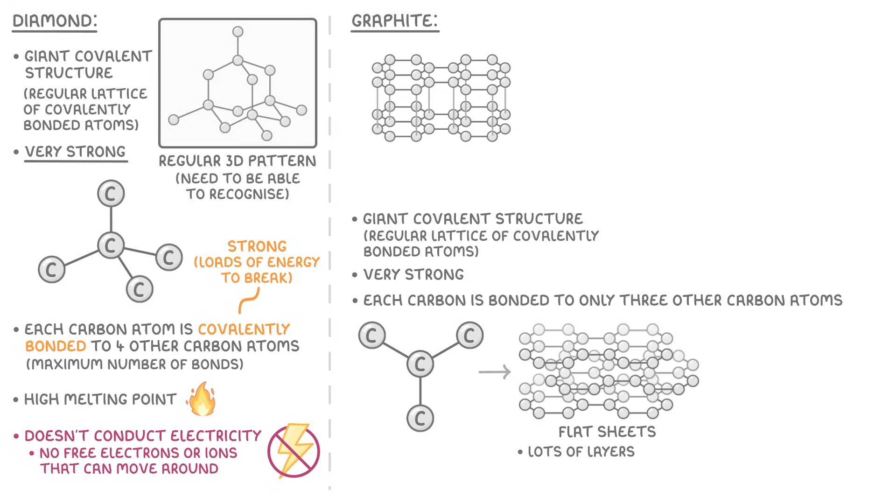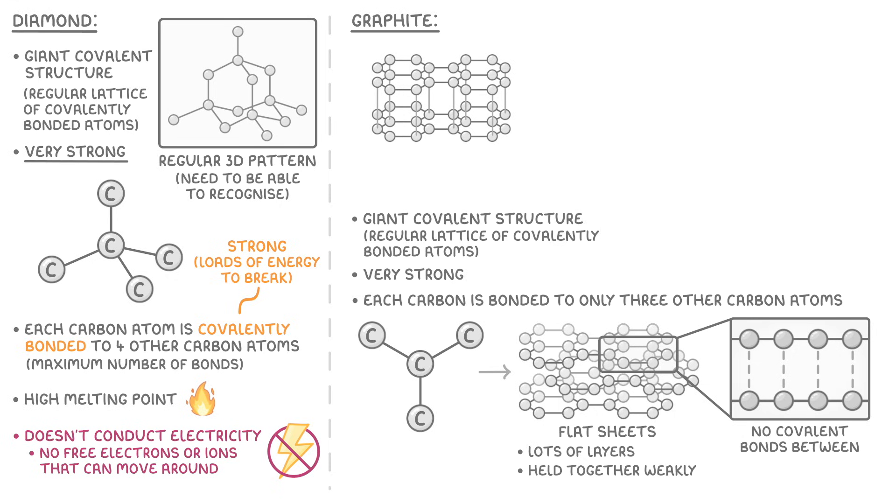However, these individual layers are only held together weakly, as there are no covalent bonds between them. This means that they're free to slide over one another, which makes graphite relatively soft when compared to diamond.